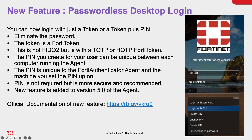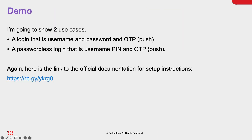This new feature was added with the 5.0 agent. If you'd like to see the official documentation, type in that short URL and it will direct you to the official documentation link. Now let's jump into the demo. I'm going to show two use cases: a login that uses username, password, and OTP — I'll use PUSH to my FortiToken mobile — and then the new passwordless login feature, which uses username, PIN, and OTP or PUSH. There's also a link to the official documentation if you want to see how to set this up in your FortiAuthenticator environment.